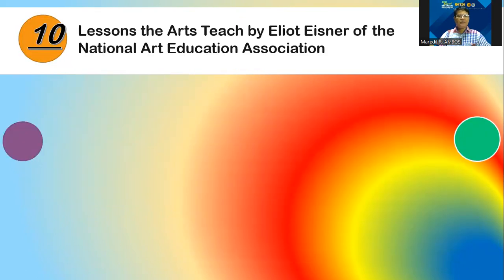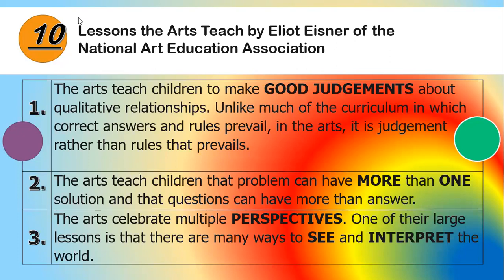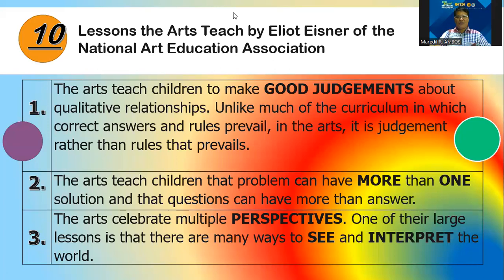We have 10 lessons on how to teach the arts by Elliot Eisner of the National Art Education Association. Lesson one: the arts teach children to make good judgments about qualitative relationships — unlike much of the curriculum in which correct answers and rules prevail, in the arts it is judgment that prevails. Lesson two: the arts teach children that problems can have more than one solution and that questions can have more than one answer.